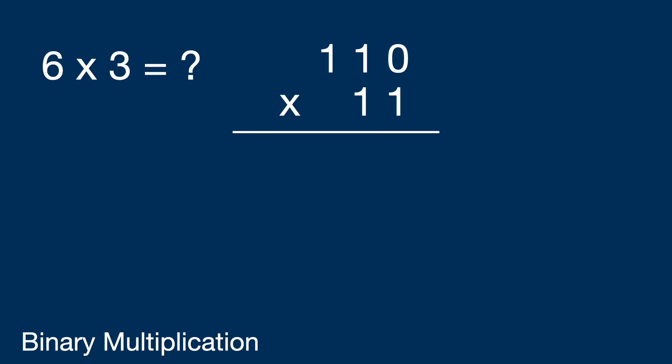Let's still use one-one-zero and one-one. One-one-zero times one equals one-one-zero, then one-one-zero times one equals one-one-zero. Then we add the two: zero plus zero equals zero, one plus zero equals one, one plus one equals zero carry one, and one plus zero plus one equals one-zero. The result is one-zero-zero-one-zero. In decimal, this is eighteen, which is the result of six times three.